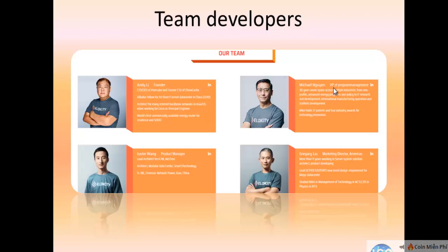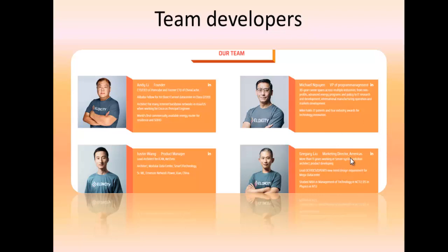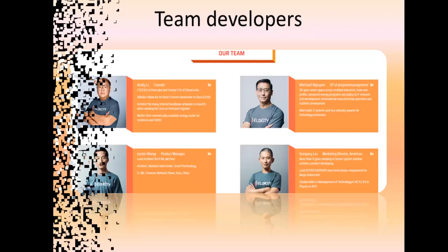Michael Nguyen is the VP of Program Management at Alancity. Justin Wong is the Product Manager. And Judge Liu is the Marketing Director of Alancity.